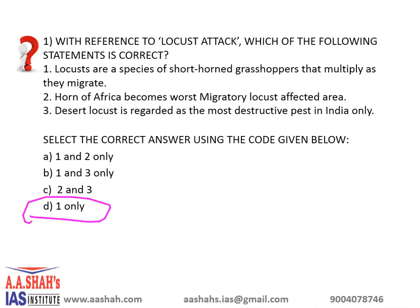The correct answer is D, 1 only. The second statement is incorrect because Horn of Africa is affected by desert locust. The third statement is also incorrect because desert locust is regarded as the most destructive not just in India but all over the world. These desert locusts basically devour leaves, flowers, fruits, seeds, and growing plants, destroying everything.